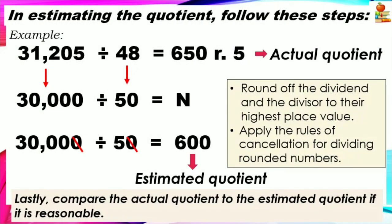How do we find the estimated quotient? In estimating the quotient, follow these steps. For example, if we divide 31,205 by 48 and we want the actual quotient, the answer is 650 remainder 5. But if we are looking for the estimated quotient, first round off the dividend and the divisor to their highest place value, then apply the rules of cancellation for dividing rounded numbers.